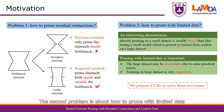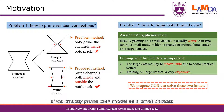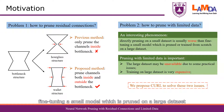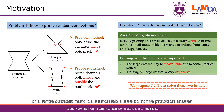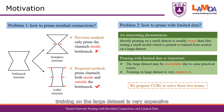The second problem is about how to prune with limited data. We observe an interesting phenomenon: if we directly prune CNN models on a small dataset, its accuracy is usually worse than fine-tuning a small model which is pruned on a large dataset. However, pruning on the small dataset is more common in practice. There are two application scenarios. Firstly, the large dataset may be unavailable due to some practical issues. Secondly, training on the large dataset is very expensive.